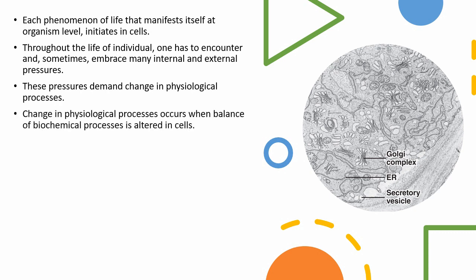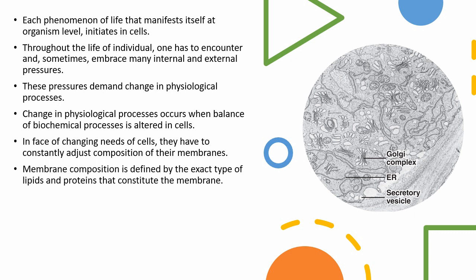Change in physiological processes occurs when balance of biochemical processes is altered in the cell. In the face of changing needs of the cell, they have to constantly adjust composition of their membranes. Membrane composition is defined by exact type of lipids and proteins that constitute that membrane.